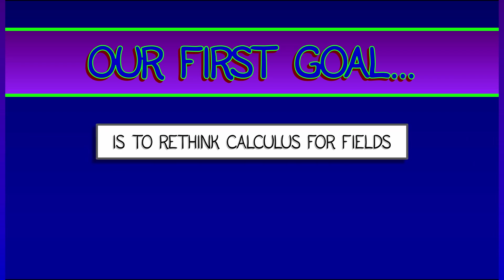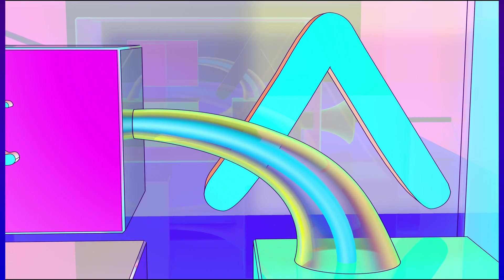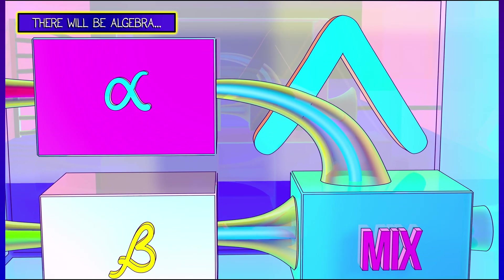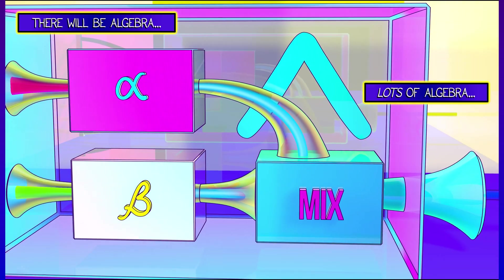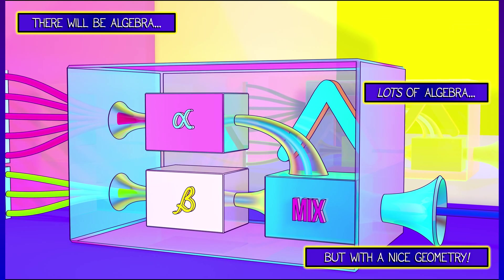Our first goal is going to be to rethink calculus for fields in the simple context of scalar fields, vector fields, and then move on to form fields. Now, there's going to be some algebra involved. Lots of algebra. But it's going to be fine. Don't worry about it. There's going to be some nice geometry involved as well.